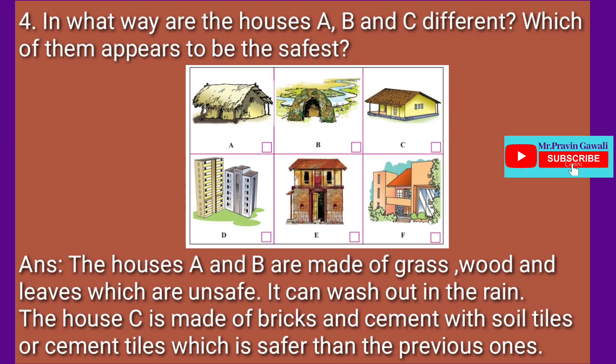First question: In what way are houses A, B and C different? Which of them appears to be the safest? The answer is: houses A and B are made of grass, wood and leaves, which are unsafe — they can wash out in the rain. House C is made of bricks and cement with soil tiles or cement tiles, which is safer than the previous ones.